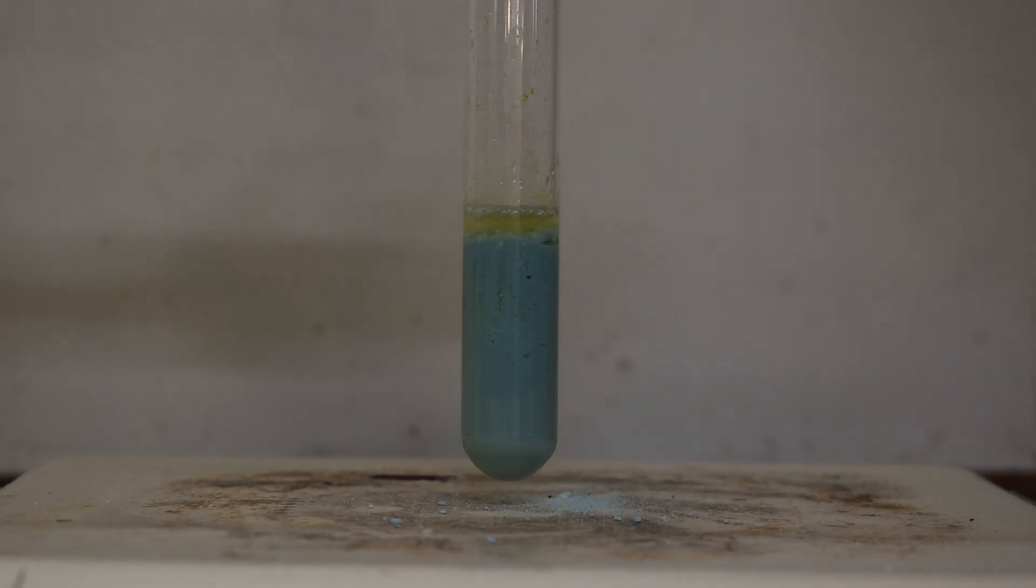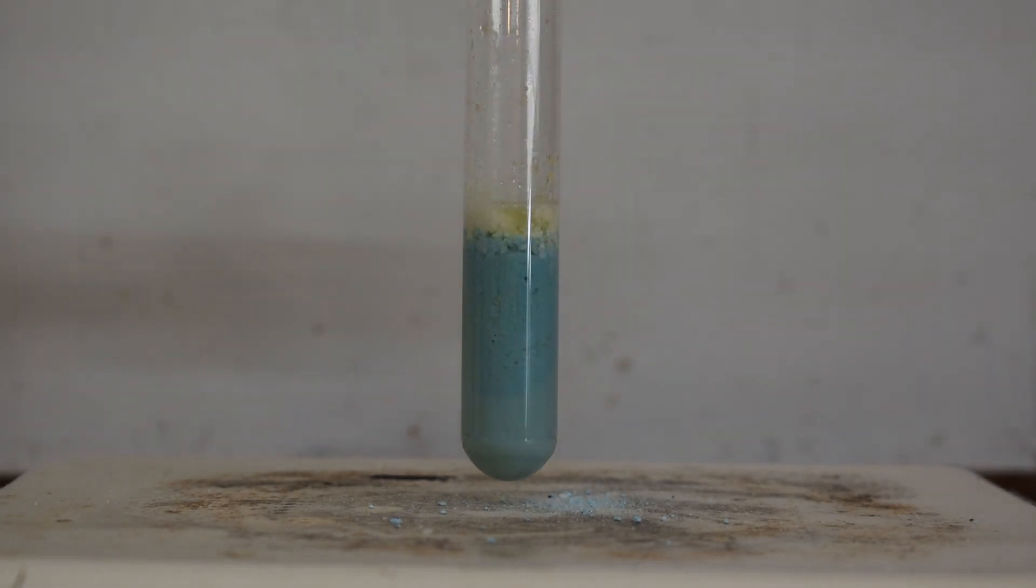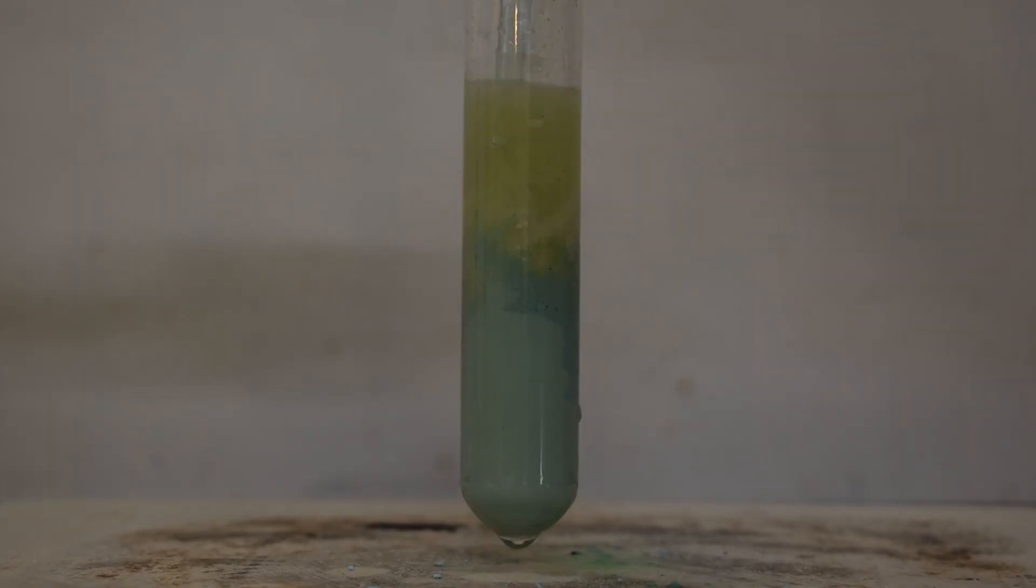As you can see, when I add the sodium hydroxide, we get our first glimpse at the yellow color of copper three ions. The stir bar also got stuck on the thick precipitate that formed, so I broke everything up with a glass stir rod.